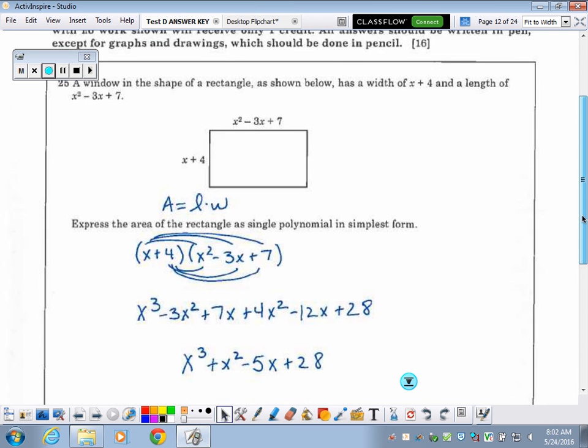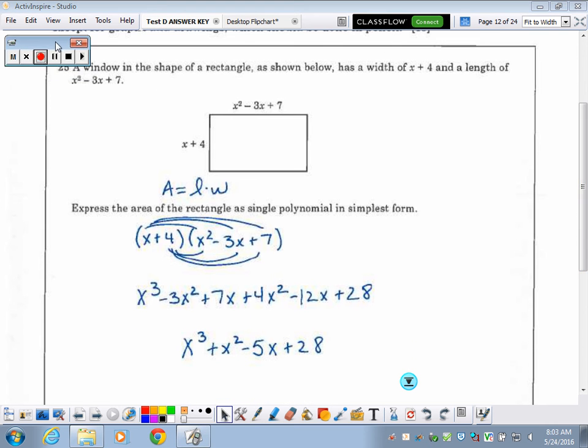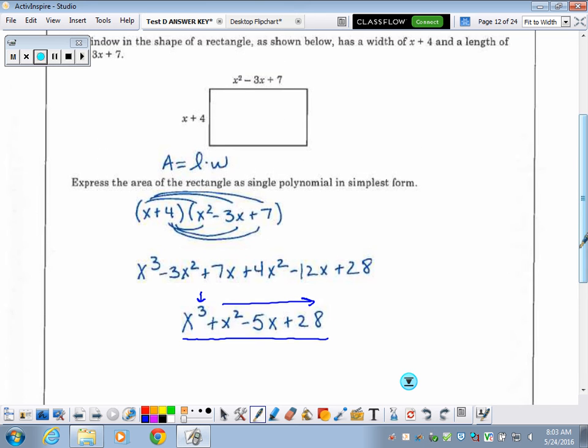They started us out with a pretty basic one on number 25. They're giving us a rectangle whose length and width are represented by polynomials, and they want us to find the area. So we're going to multiply our width times our length. It doesn't matter the order because of the commutative property. We're distributing, obviously going to end up with 6 terms here, because when you have 2 terms times 3 terms, that'll give us 1, 2, 3, 4, 5, 6, combining like terms and writing our answer in standard form.